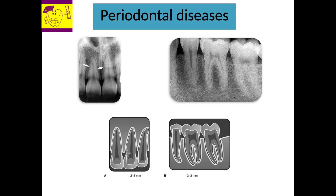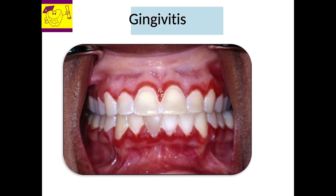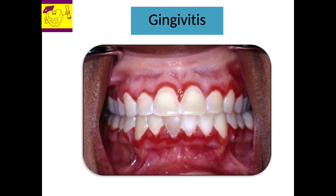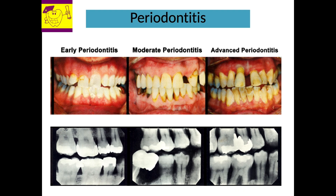The commonest periodontal disease is inflammation of the gingiva, called gingivitis. The marginal gingiva, attached gingiva, and interdental gingiva are red, inflamed, tender, and bleed on probing. Inflammation from the gingiva can extend onto the periodontium, which is called periodontitis. Based on clinical signs like gingival recession, periodontal pocket formation, furcation involvement, and mobility of teeth, and radiographic findings like vertical, angular, or horizontal bone loss, periodontitis is classified as early, moderate, and advanced.